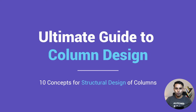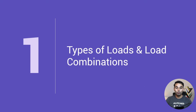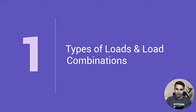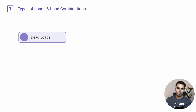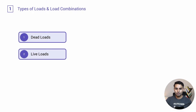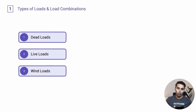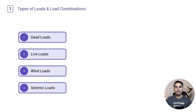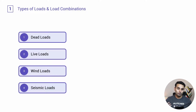Let's start with concept number one, which is going to be the types of loads and the load combinations to be considered for the structural design of columns. When it comes to the types of loads, we are working with dead loads, live loads, wind loads, and seismic loads. These are going to be the four major types of loads with respect to IS 456 for which we'll be designing our columns.